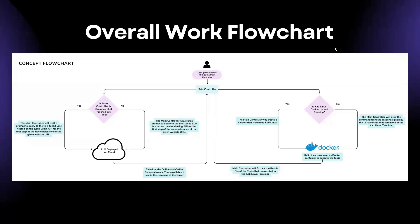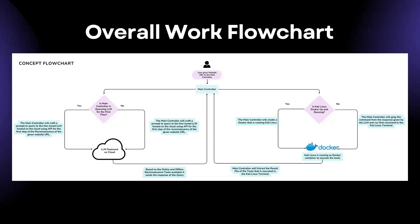Once the outputs of the initial scan come in, they get sent to our LLM, which acts as the brain. We gave this LLM complete control and dynamic decision-making capabilities, further enhanced by implementing a RAG via LangChain with Elasticsearch. The LLM analyzes the output, makes a mini report of findings, then autonomously decides the next step — for example, after an nmap scan showing port 80 open with a web server running, it might decide to run GoBuster on it.